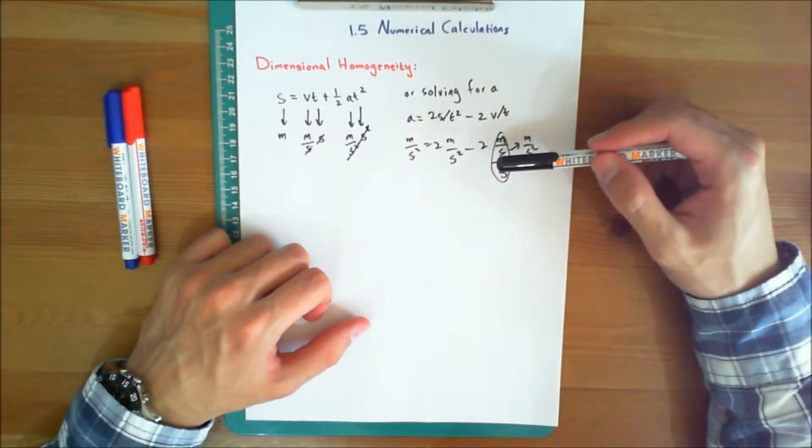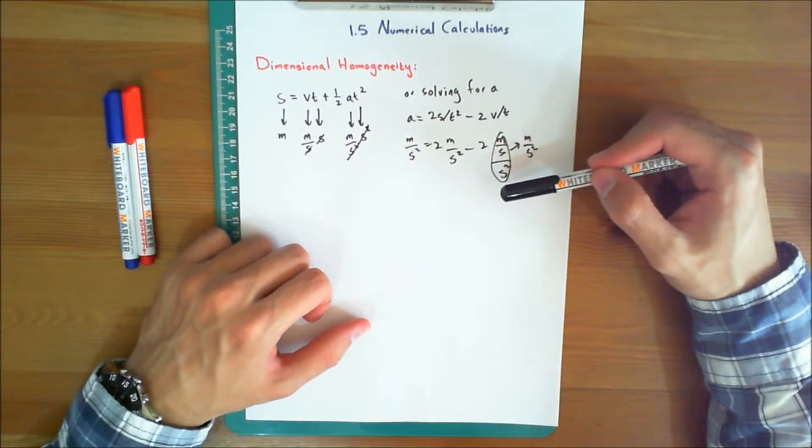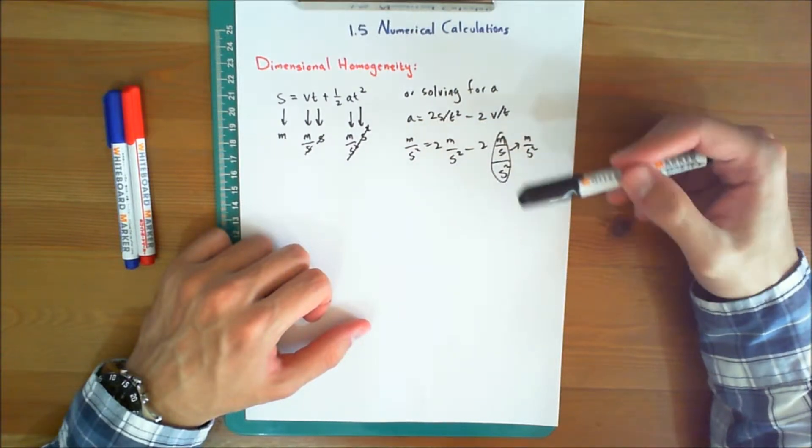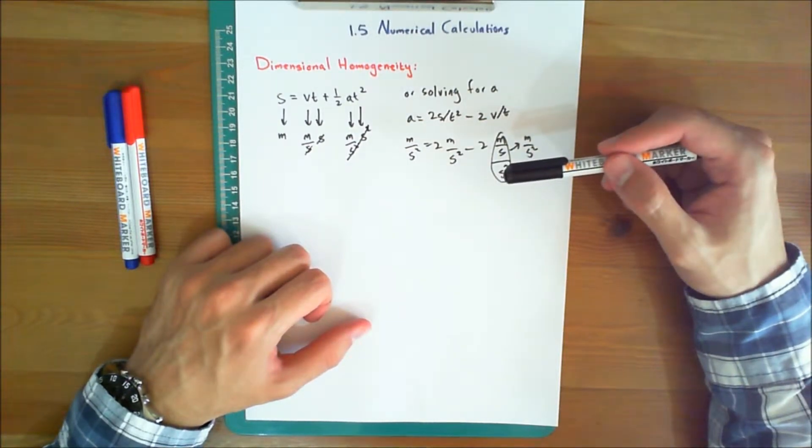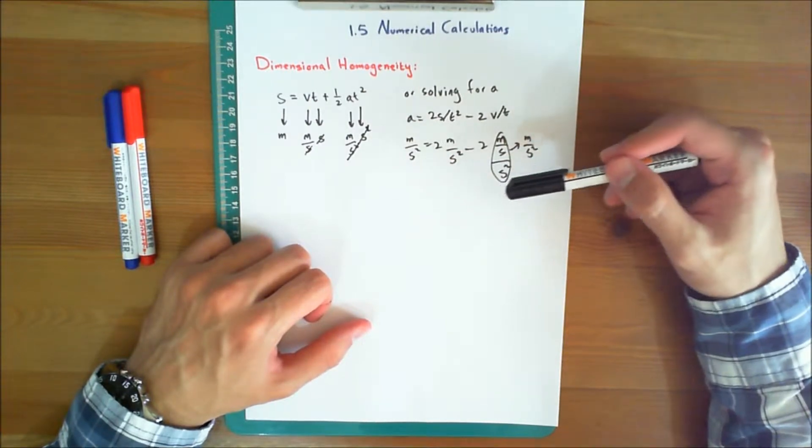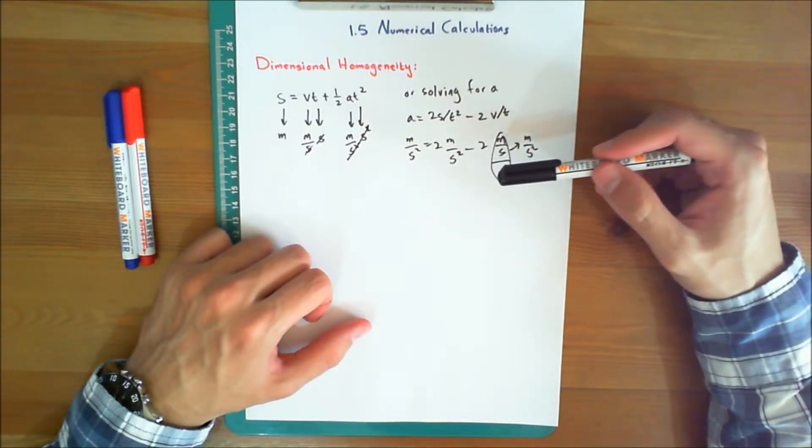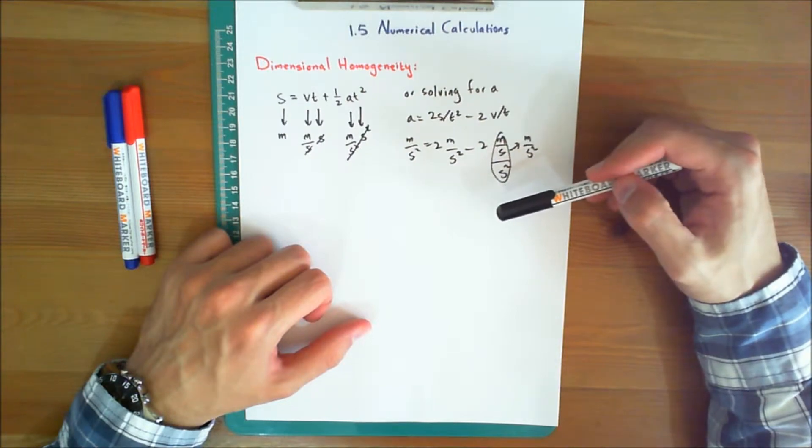Since problems in mechanics involve the solution of dimensionally homogeneous equations, the fact that all terms of an equation are represented by a consistent set of units can be used as a partial check for algebraic manipulations of an equation.